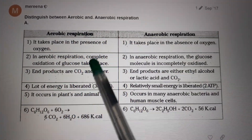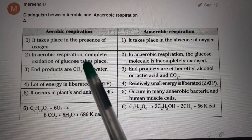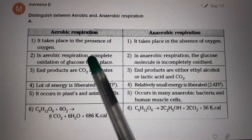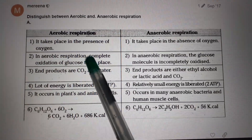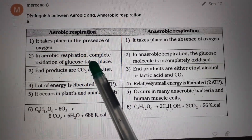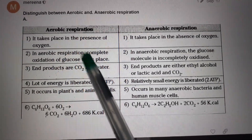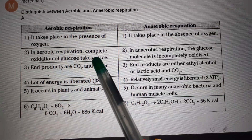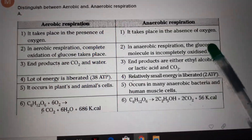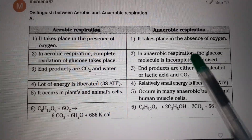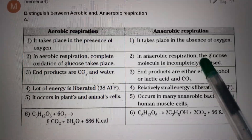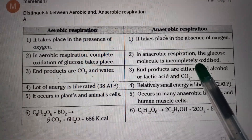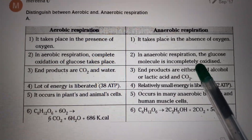In aerobic respiration, complete oxidation of glucose takes place. The oxidation process is done in the presence of oxygen, so complete burning, complete combustion, complete oxidation of glucose occurs. In anaerobic respiration, the glucose molecule is incompletely oxidized. In the absence of oxygen, incomplete oxidation takes place.